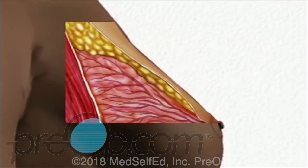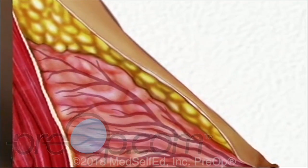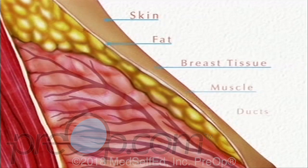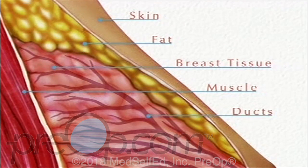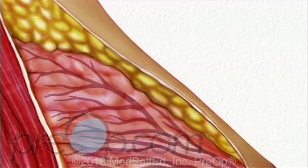Let's take a moment to look at the reasons why lumps form in breast tissue. The breast is made of layers of skin, fat and breast tissue, all of which overlay the pectoralis muscle. Breast tissue itself is made up of a network of tiny milk-carrying ducts, and there are three ways in which a lump can form among them.